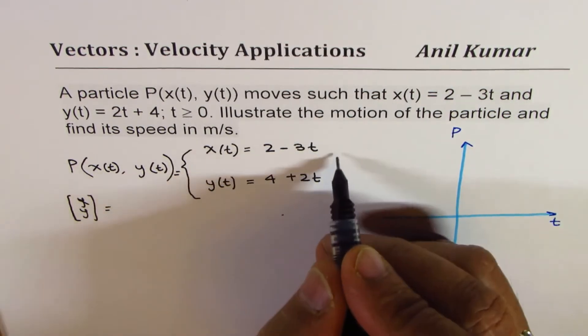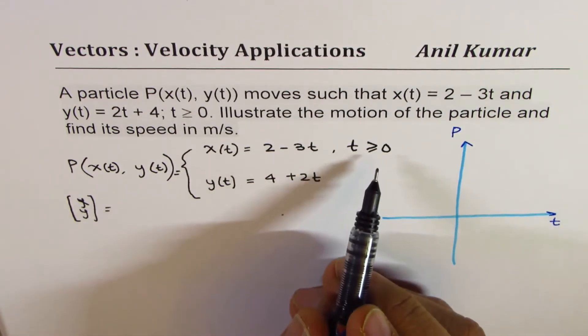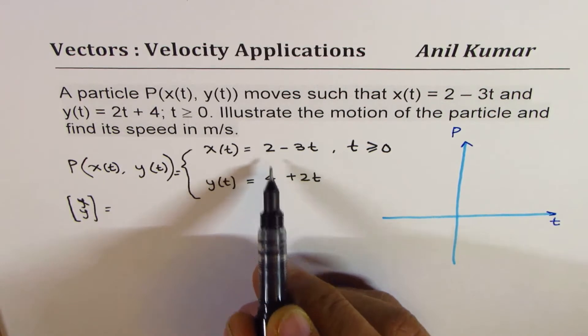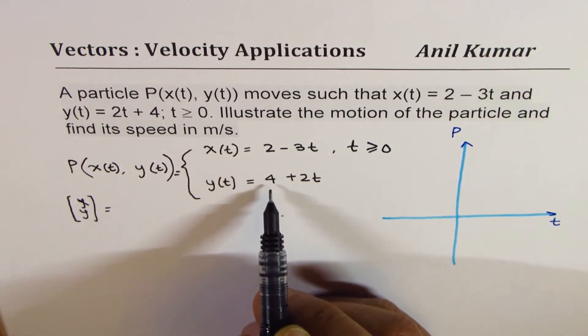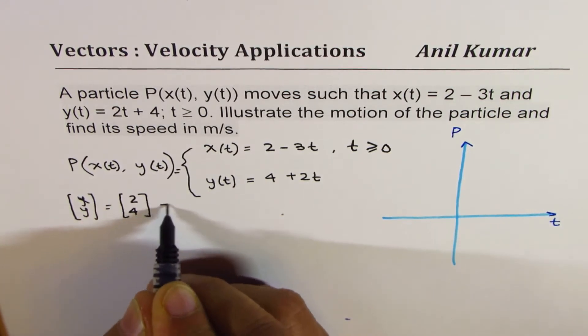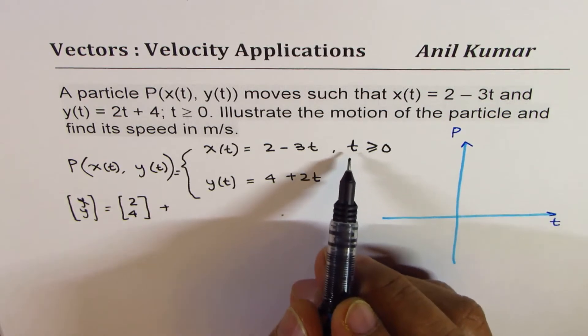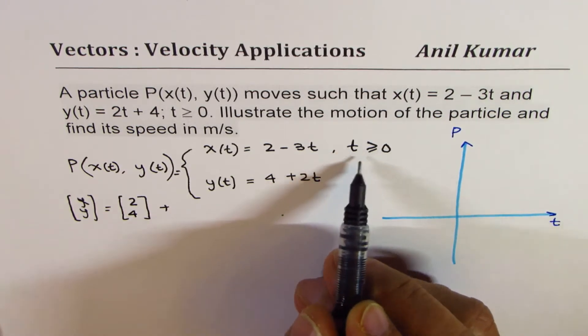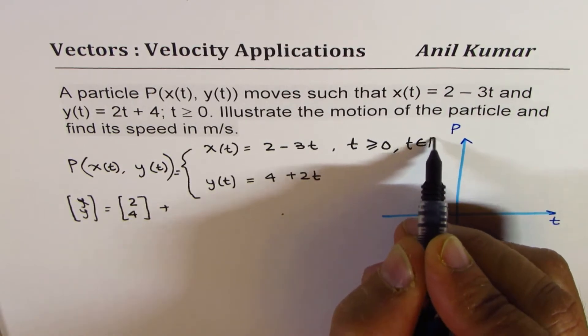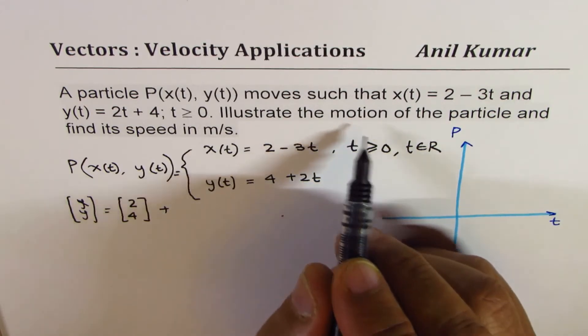What is the initial point? If I substitute t equals 0, what happens? Let me also write that t is greater than or equal to 0. The initial point is when t equals 0: it is 2 for x and 4 for y, so the initial point is (2, 4).